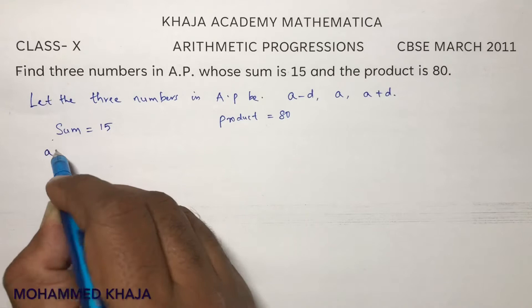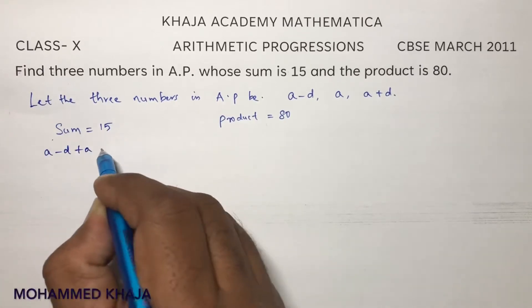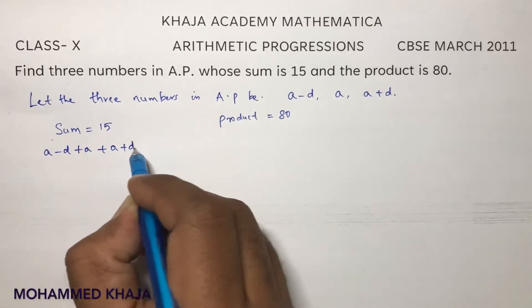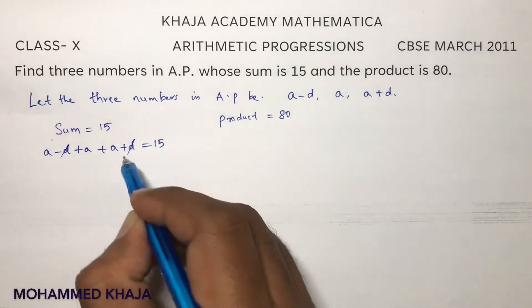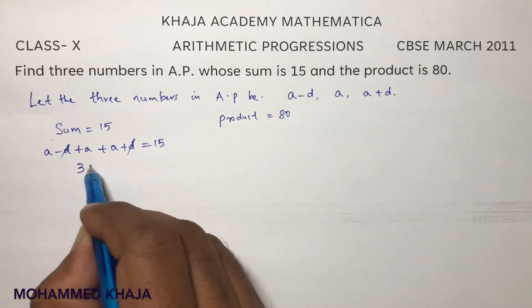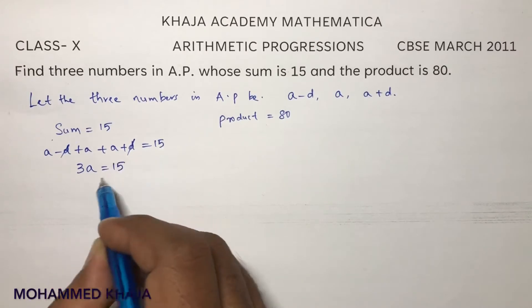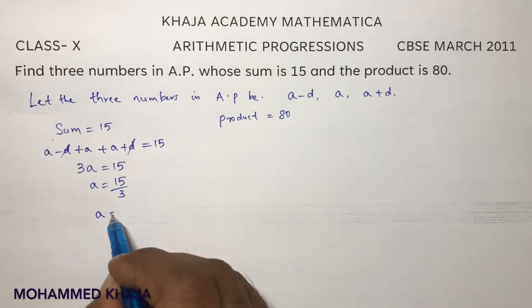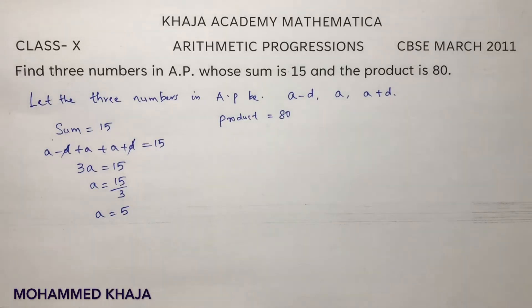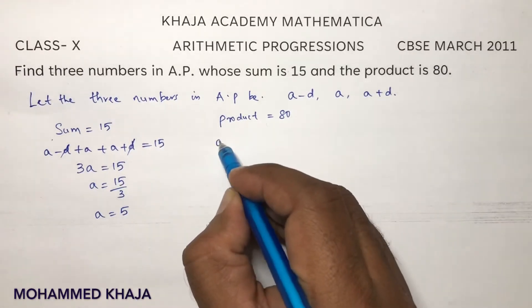So here A minus D plus A plus A plus D equals 15. Minus D plus D cancel. 3A equals 15. A equals 15 by 3 which is nothing but 5.